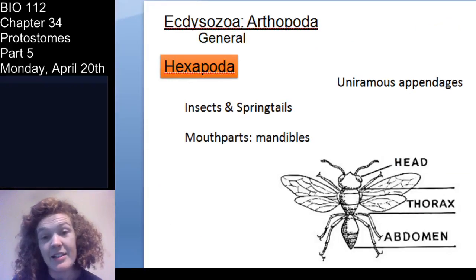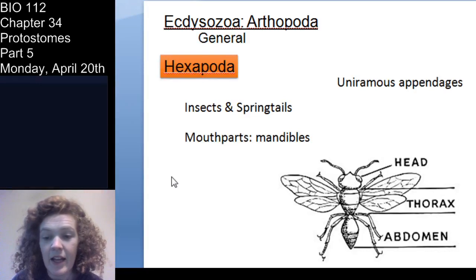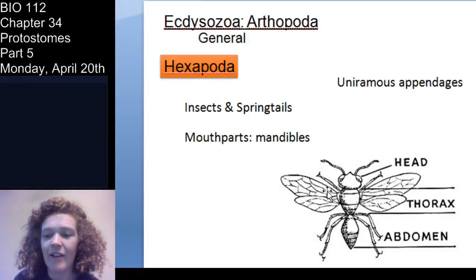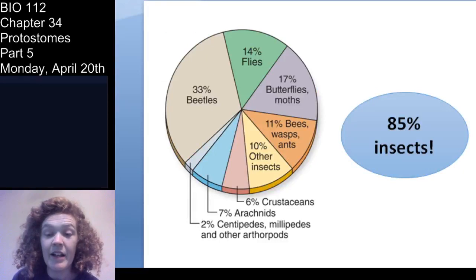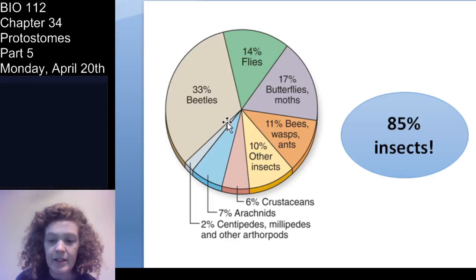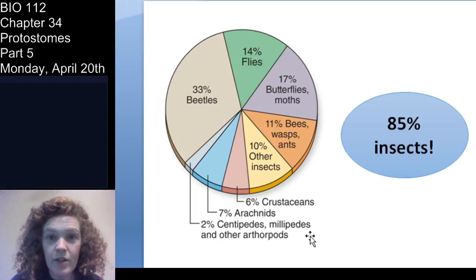Hallmarks of hexapods: they also have uniramous appendages, meaning they're not forked, and rather than having chelicerae their mouthparts are mandibles — that's true of the other arthropods that are not chelicerata. They clearly have three segments — head, thorax, and abdomen. Within the arthropods, most are insects; crustaceans, arachnids, myriapods, and other arthropods make up the rest.